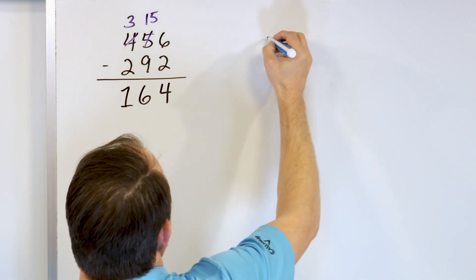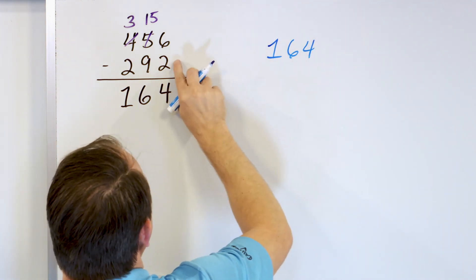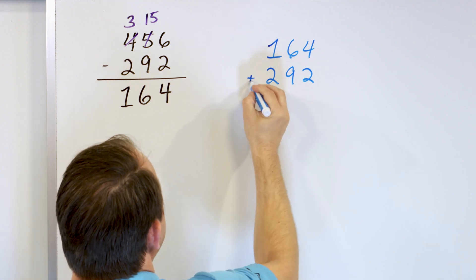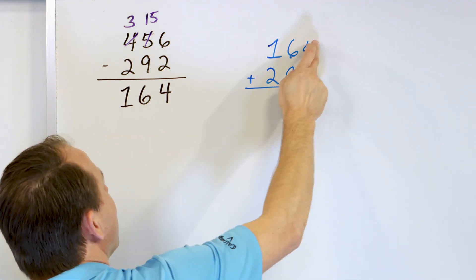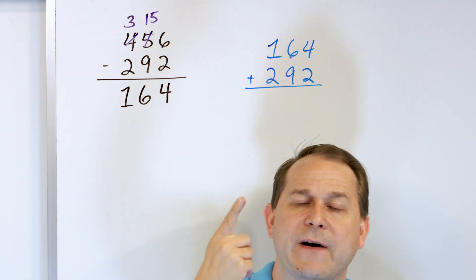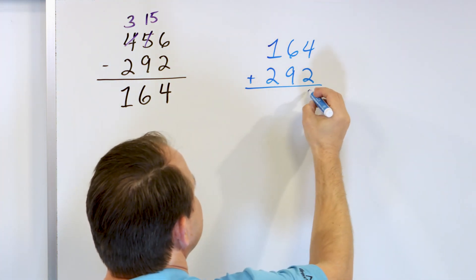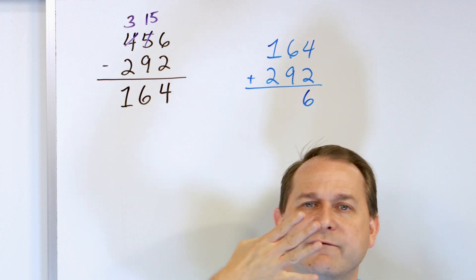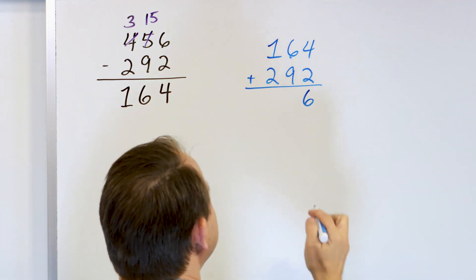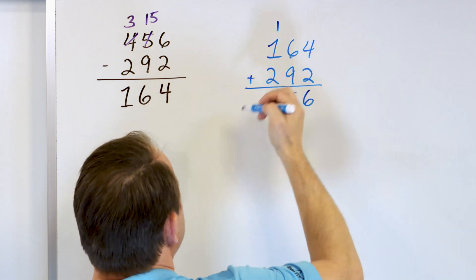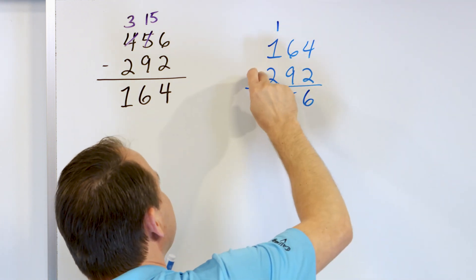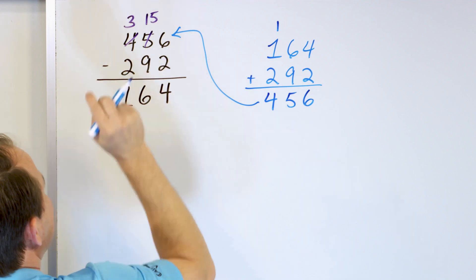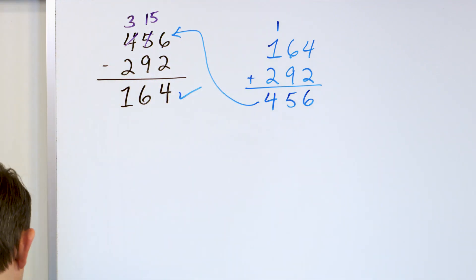We'll check it by starting with 164 and adding back in what we subtracted: 292. 4 plus 2: start with 4, go up 5, 6. We land on 6, so 6 goes right here. 9 plus 6: start with 9 and go up 10, 11, 12, 13, 14, 15. So 9 plus 6 is 15 — we have the 5, we carry the 1. Now we have 2 plus 1 is 3, plus 1 more is 4. We get 456, which exactly matches, so we know our original subtraction was correct.